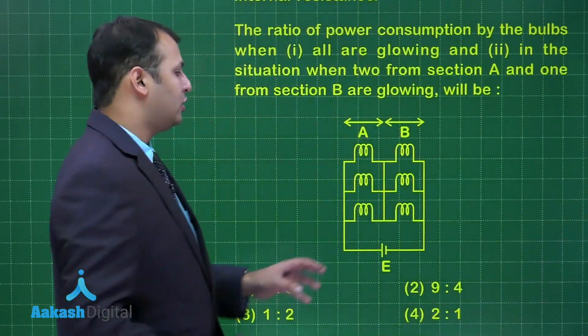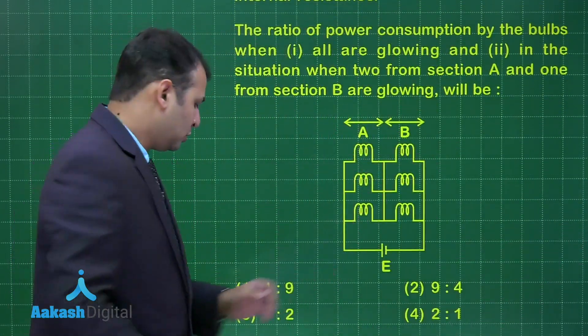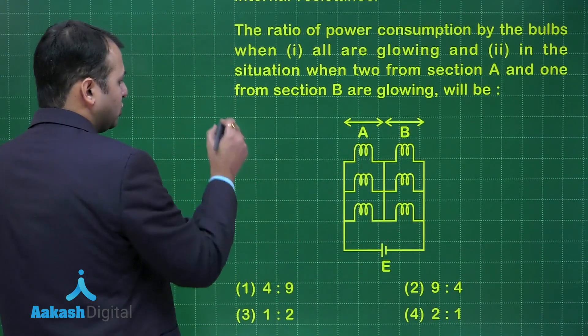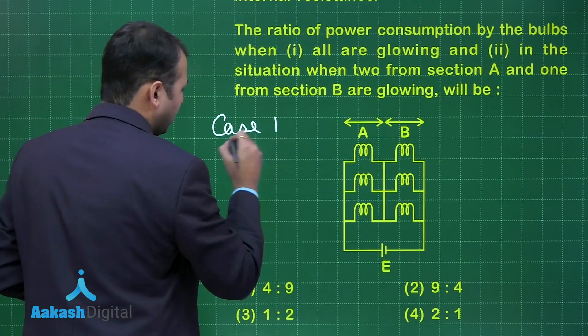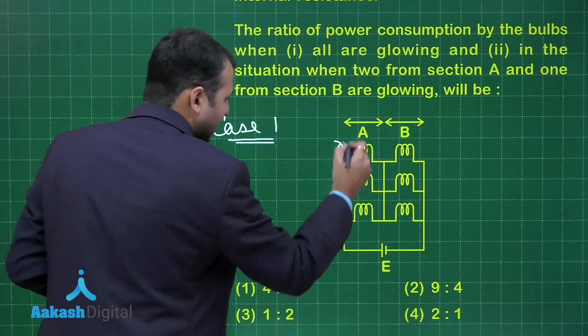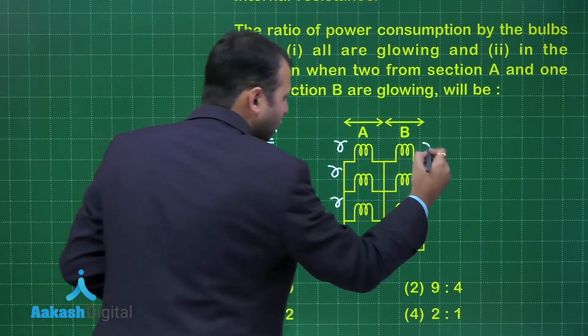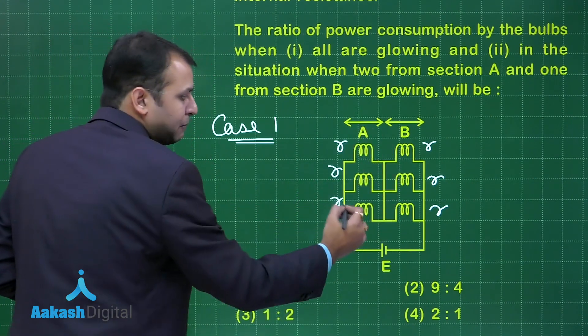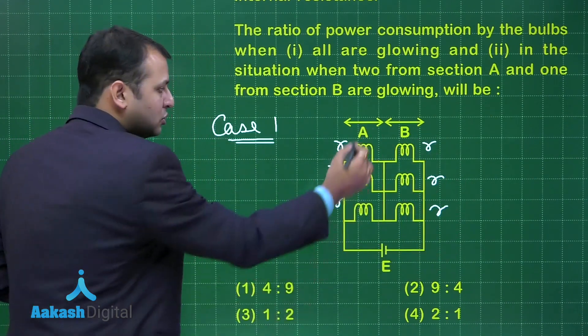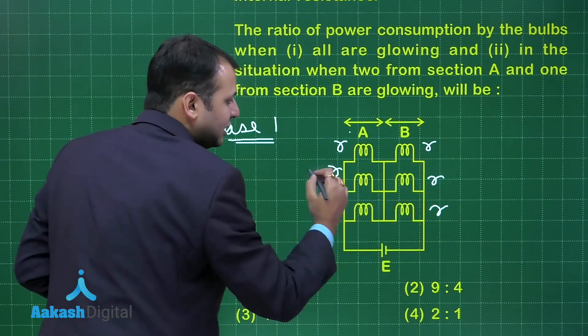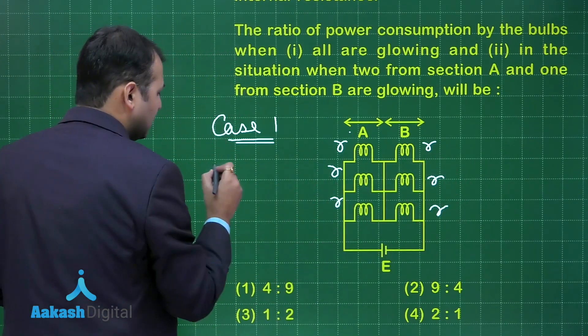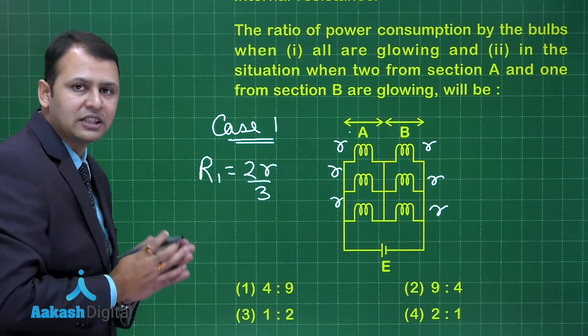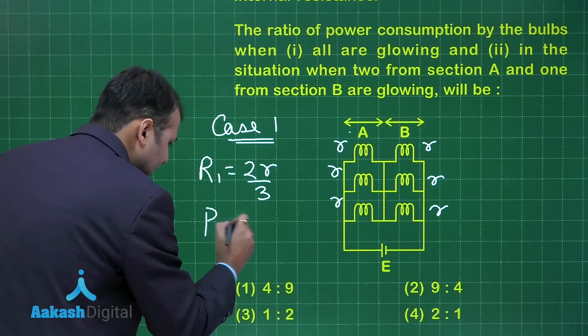In the first scenario, all the bulbs are active. Let's take it as case 1. If you see, all are same so all will be having same resistance. In this combination, these three are parallel, these three are parallel, and they are in series. That means the net resistance R1 here would be 2R by 3. That would be the first case. What is the power emitted here? So it would be E square by R1.